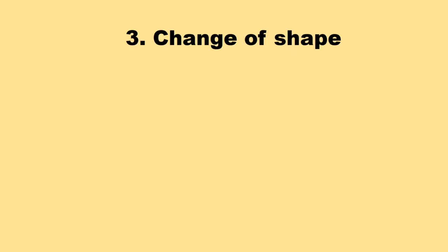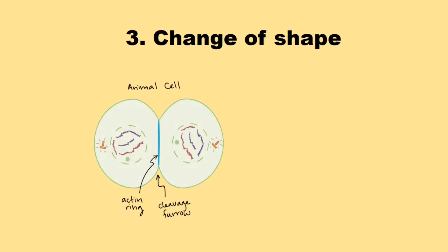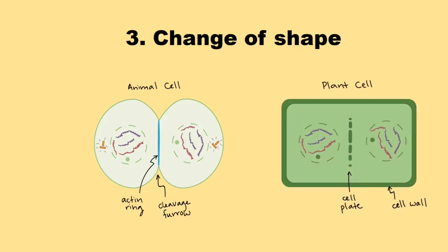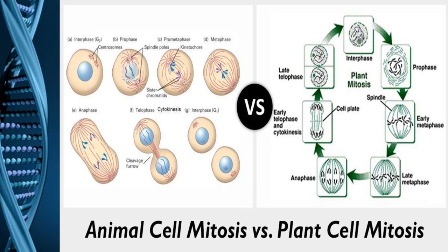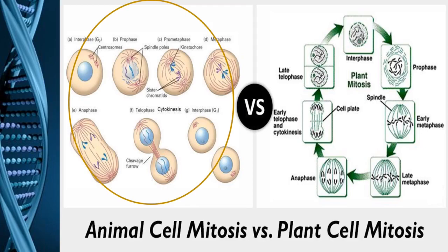The next difference is the change of shape, which takes place during the process of mitosis. In an animal cell this change of shape is very prominent as the cell passes from one stage to another, undergoing a change in its shape. Whereas in a plant cell, it doesn't change much during the process of mitosis. Let's see this image of an animal and a plant cell undergoing mitosis.